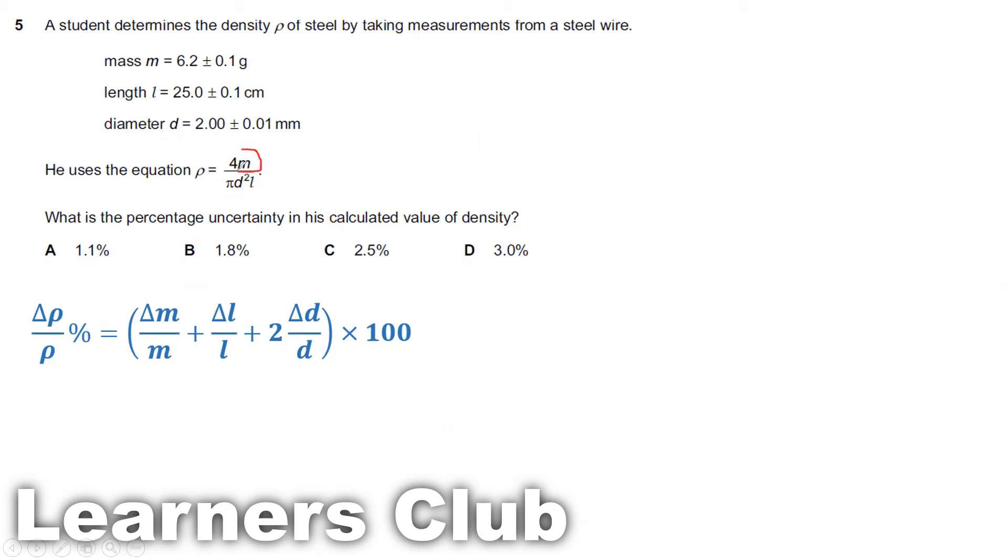So for m, Δm over m, that will give you the fractional uncertainty. For 4 and π, that's a constant value, a numerical value. We do not have any uncertainty. d squared. For d, we have Δd over d. But since there is a power, that will be multiplied by 2. For l, Δl by l.